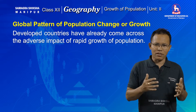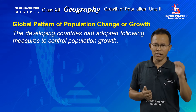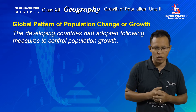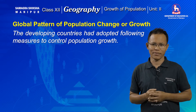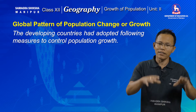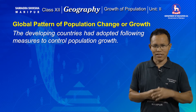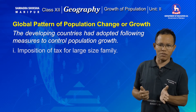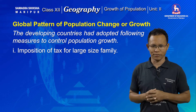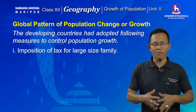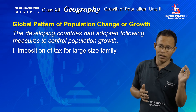The developed countries are already aware of the adverse impact of the rapid growth of population. These countries, having passed through the second stage of demographic transition theory, try to control or tackle the rapid growth of population by taking up certain measures. They have already adopted some population control measures. For example, imposition of tax on large-size families — those families having a large number of members have to pay tax.